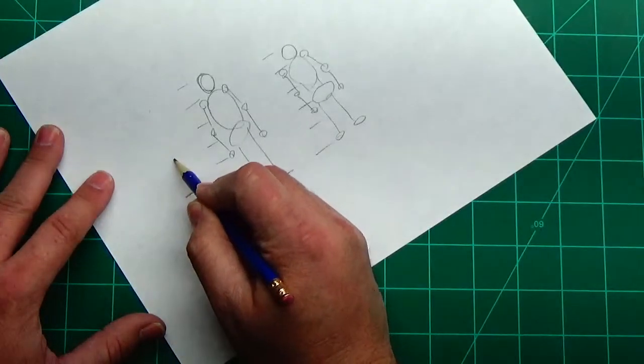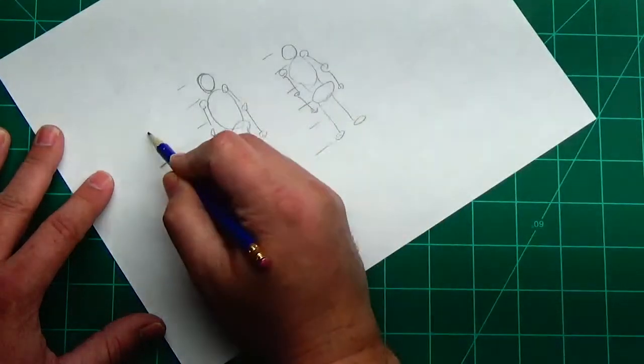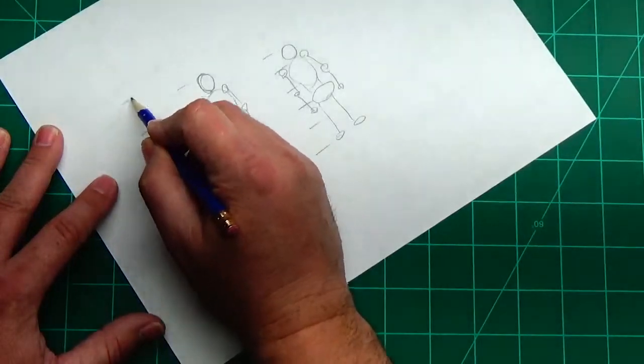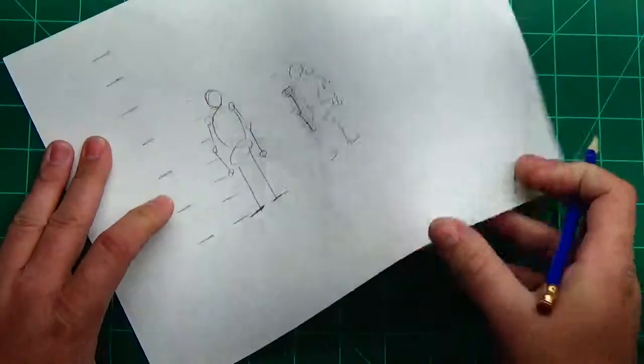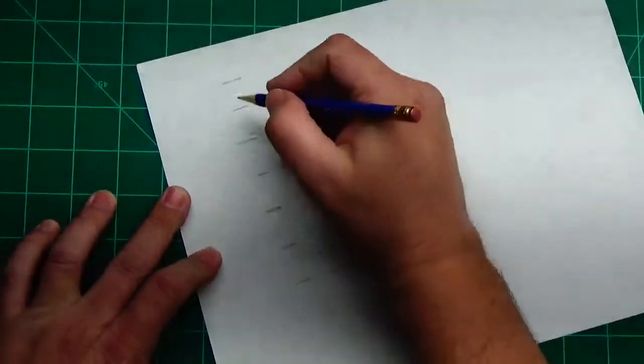So that'd be one, two, three, four, five, six, which would give you a much, much larger person.